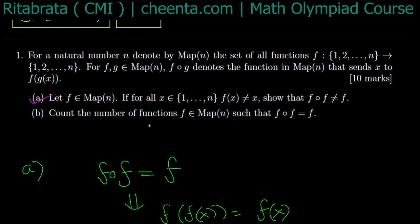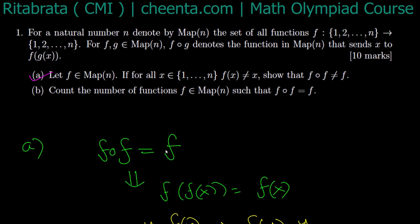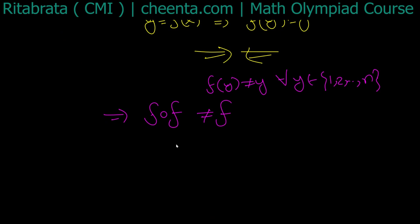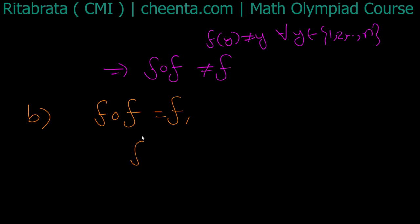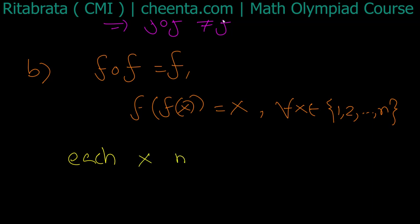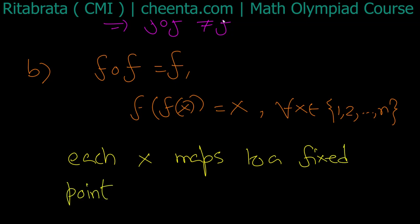In the second part I have to count functions such that f∘f equals f. This is an interesting counting problem. f∘f = f means for all x, f(f(x)) = f(x). This means each x maps to a fixed point of f — those points y such that f(y) = y.